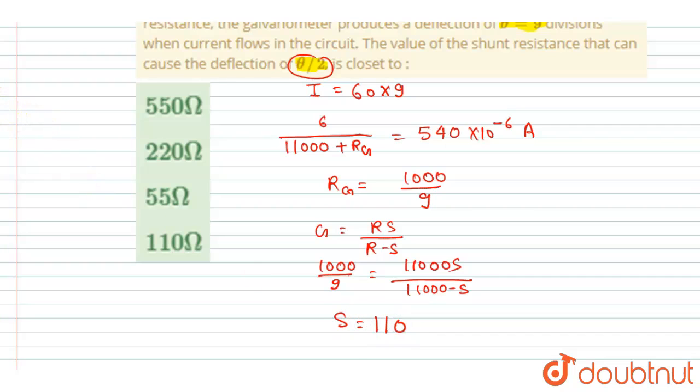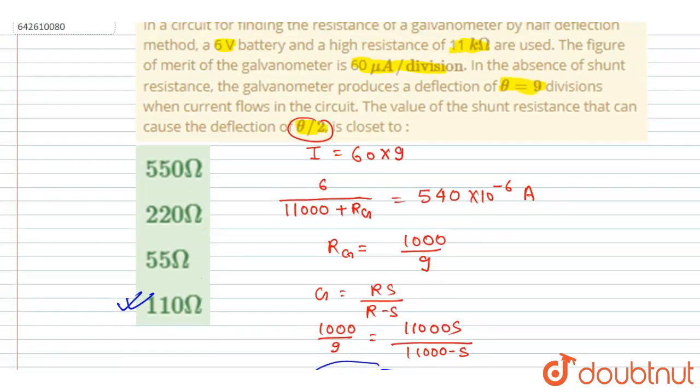11000. So this will be the value of shunt resistance required for theta by 2 deflection. So from here we can directly say D is the correct option. Simple, thank you.